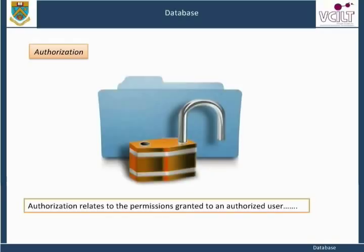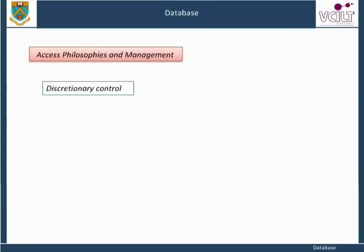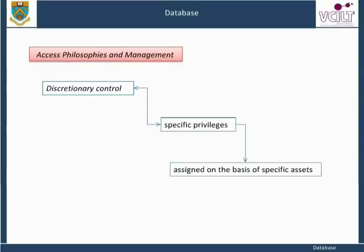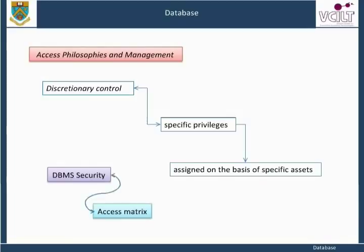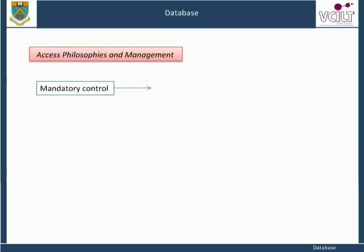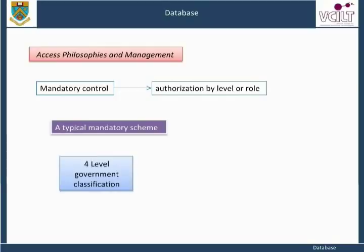Authorization relates to the permissions granted to an authorized user to carry out particular transactions, and hence to change the state of the database and/or to receive data from the database. Discretionary control is where specific privileges are assigned on the basis of specific assets which authorized users are allowed to use in a particular way. The security DBMS has to construct an access matrix including objects. Mandatory control is authorization by level or role. A typical mandatory scheme is the four-level government classification of open, secret, most secret, and top secret.